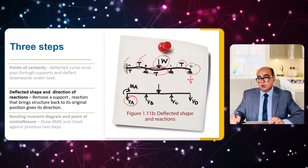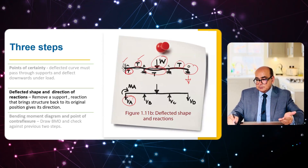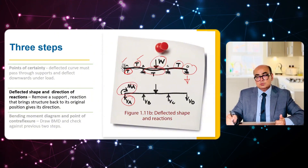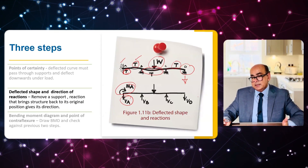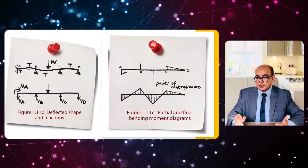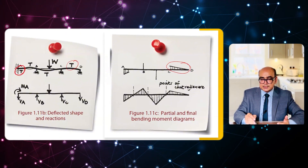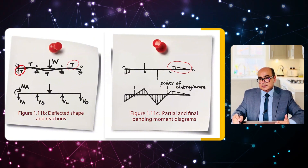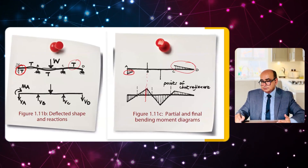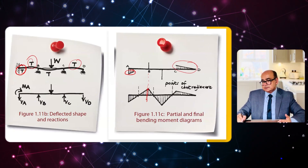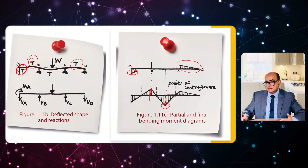The anti-clockwise or hogging moment is resisted by a clockwise resisting moment at the fixed support, causing sagging due to the direction of reaction. For the BMD: between C and D we have hogging, drawn upwards. At A, because of the resisting moment causing sagging, that portion is drawn downwards. At B, tension is at the top so it is drawn upwards, and at the load point it is sagging downwards. We connect these points to form the bending moment diagram.